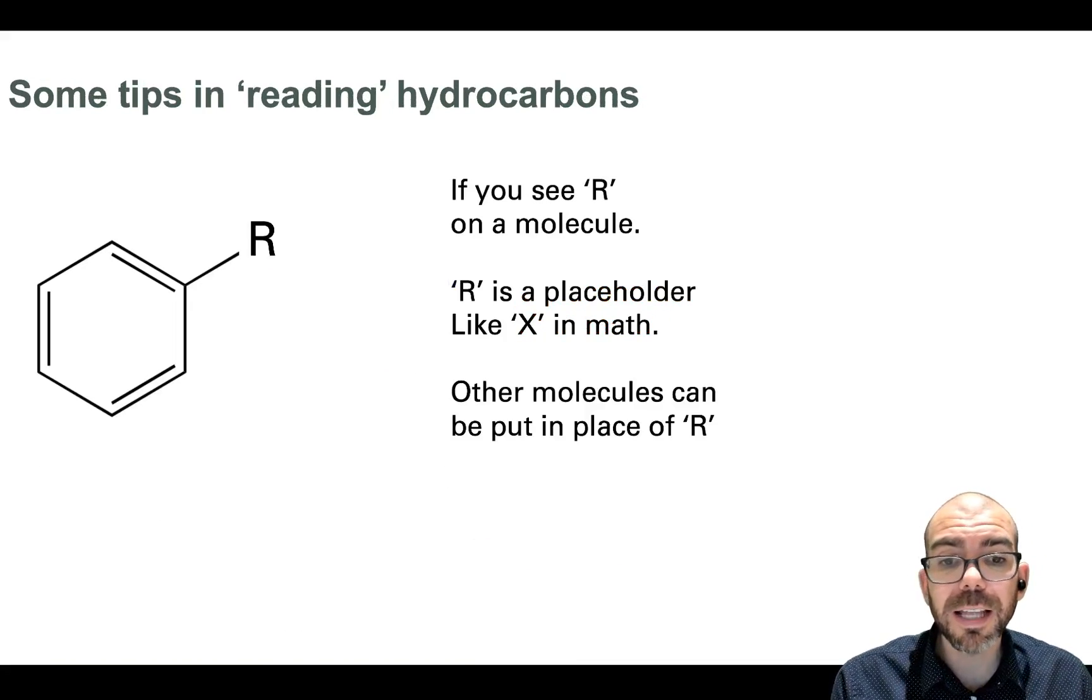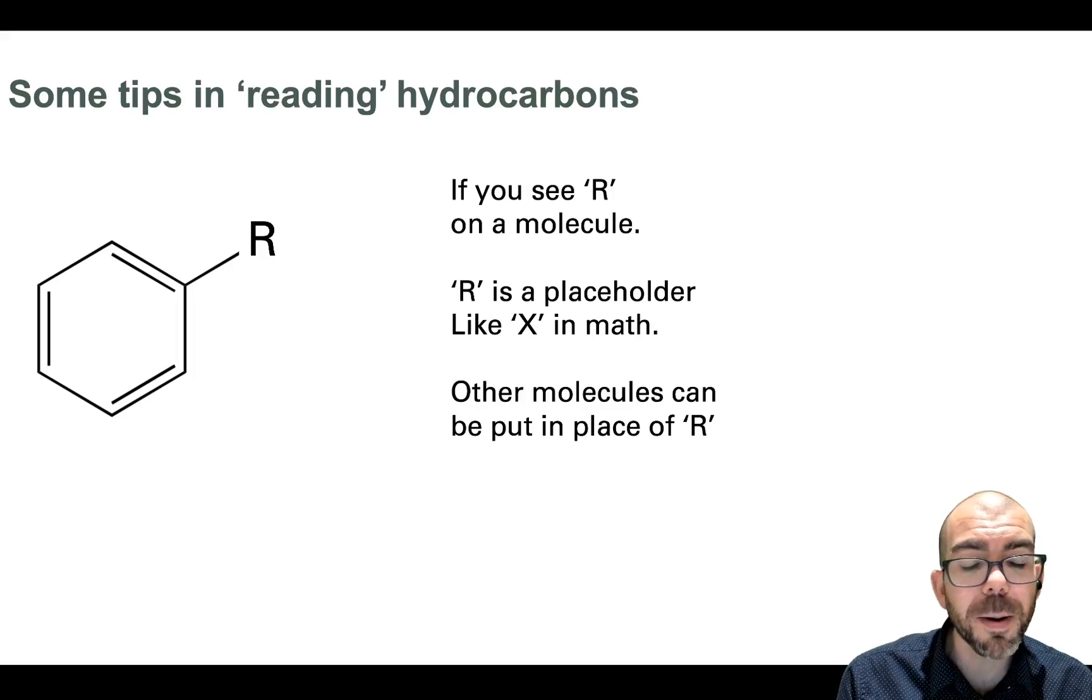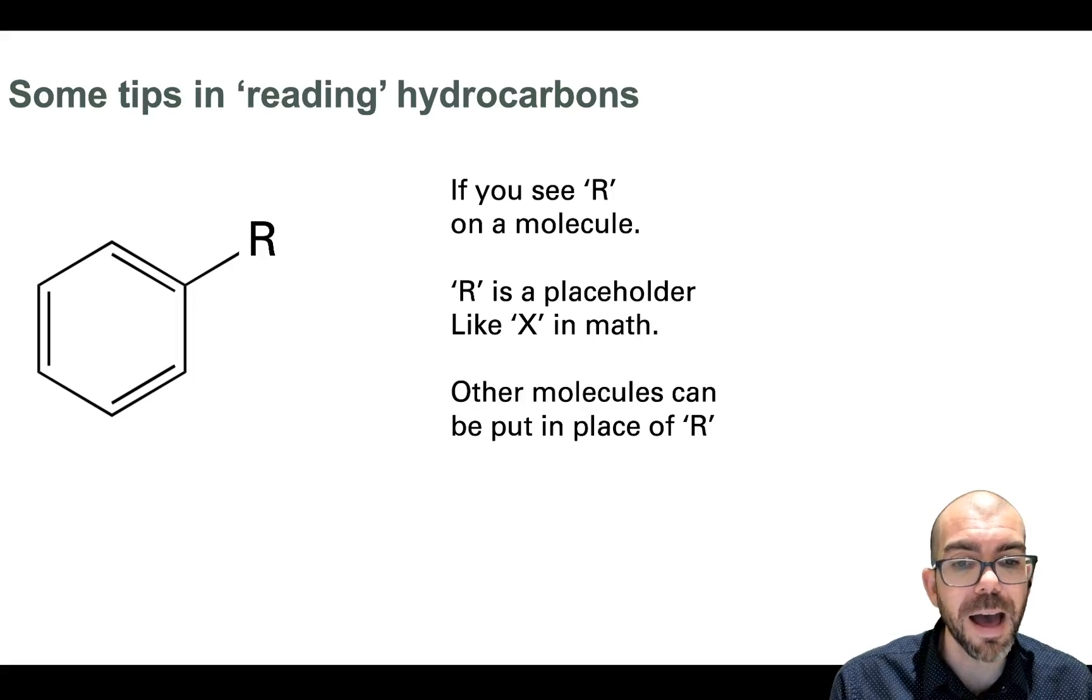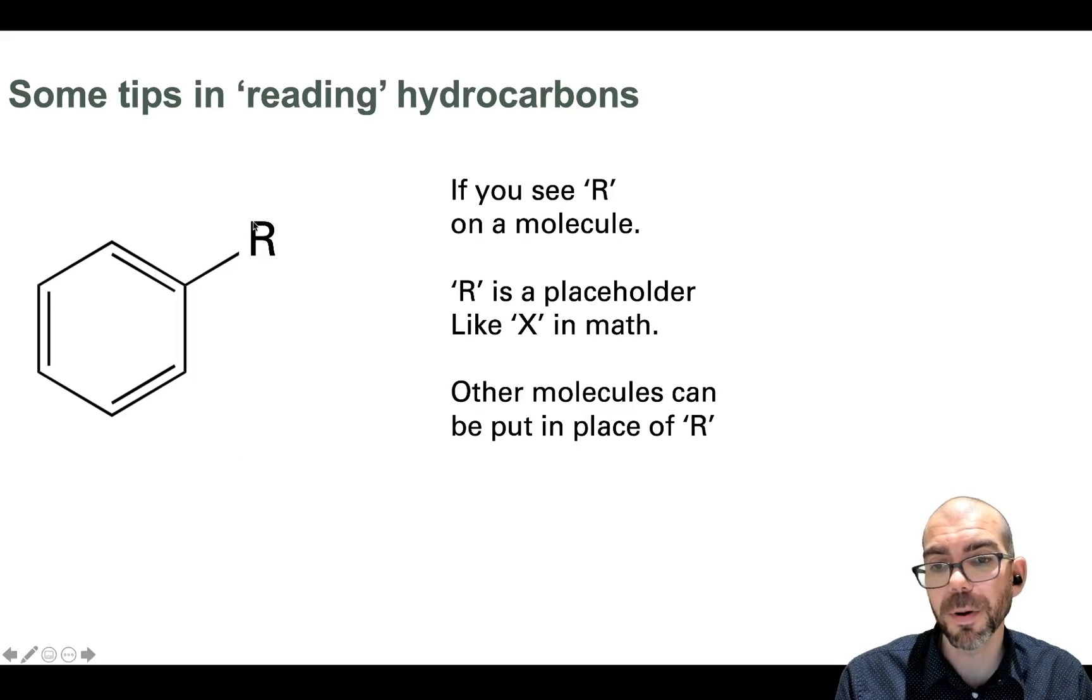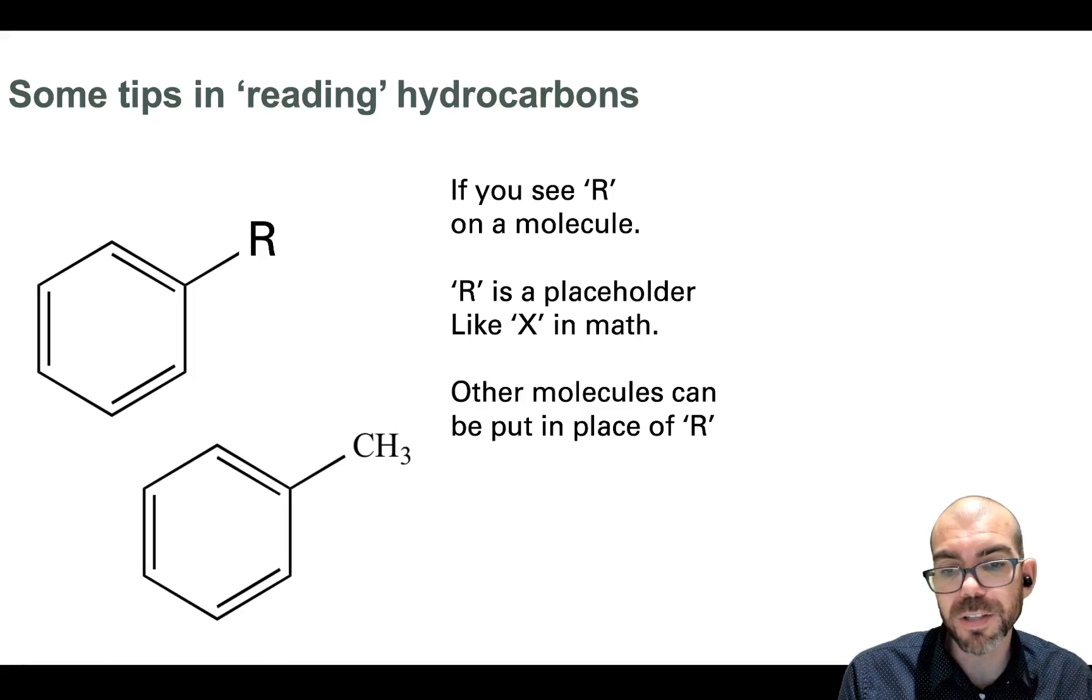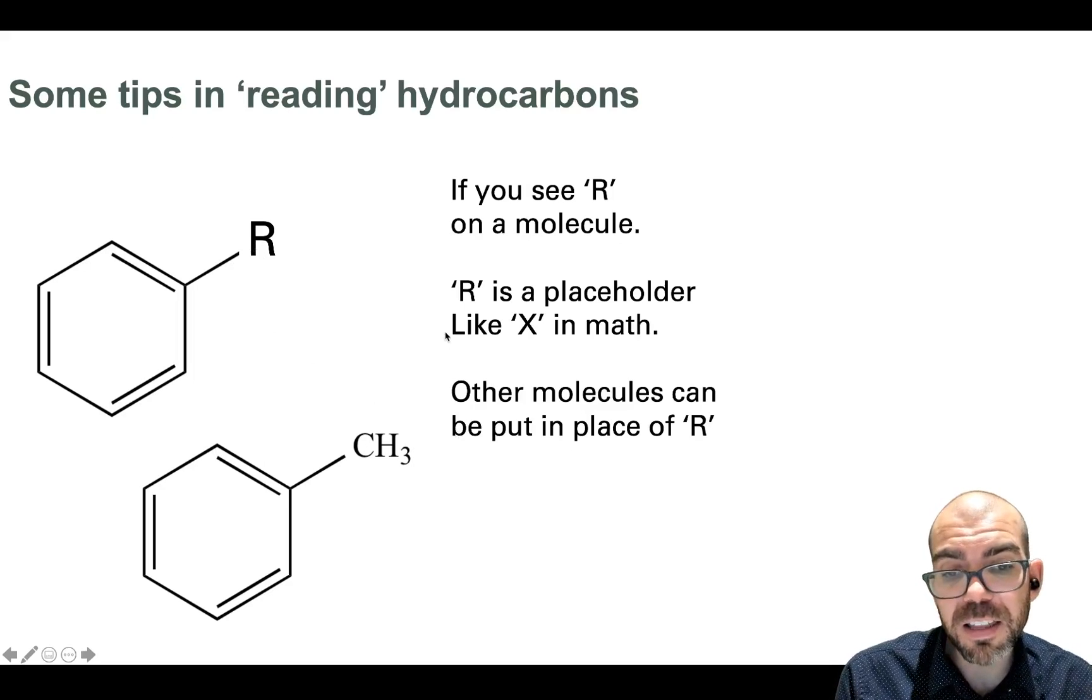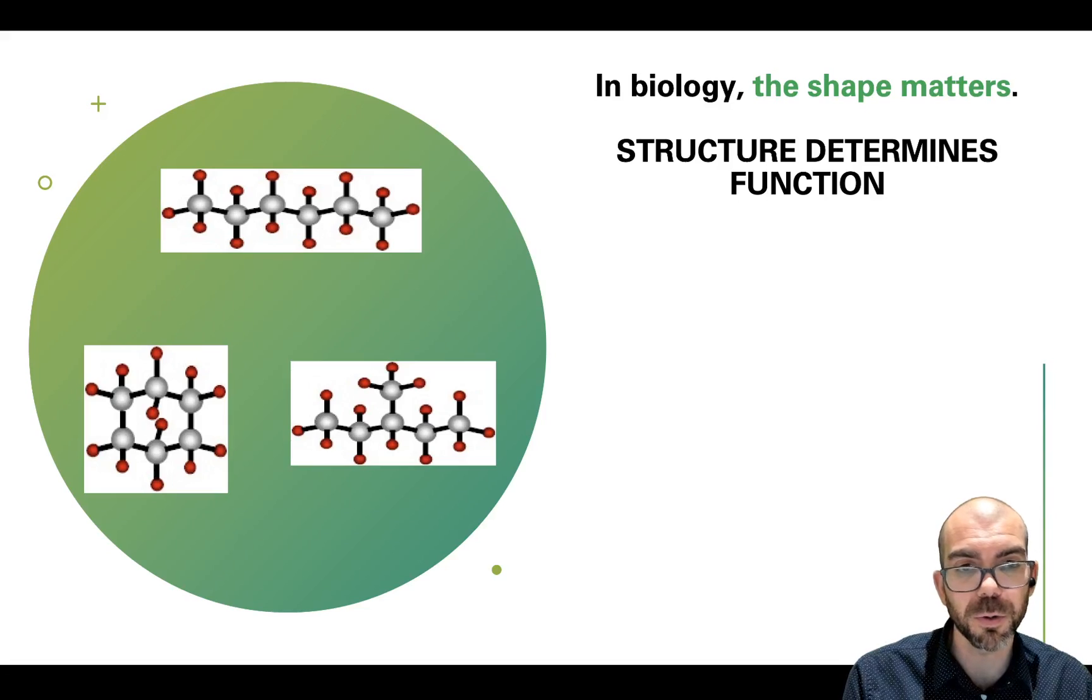Now, if you see a ring with the letter R attached to it, R does not represent any atom or molecule. Think of R like an X in math. It just means insert molecule here. We have this carbon ring with one thing bonded, and anything could be placed in that bond. For example, here is a ring with methane CH3 attached. It could have been anything else, it could have been a hydroxyl. The R is just a placeholder.